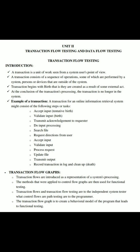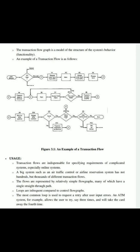The transaction flow graph creates a behavior model of the program that leads to functional testing. An example of a transaction flow includes: user begins, type reader, request order from CPU, wait, accept order from CPU, and process form.